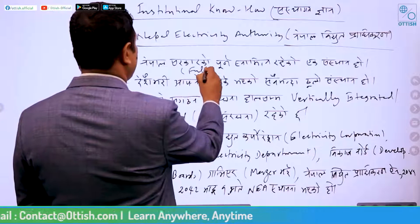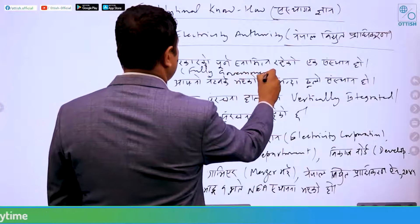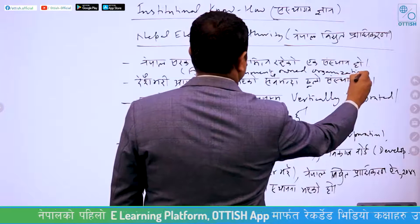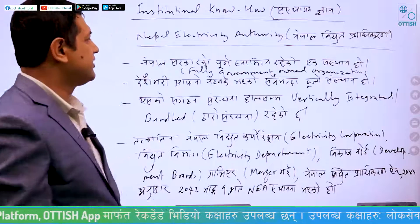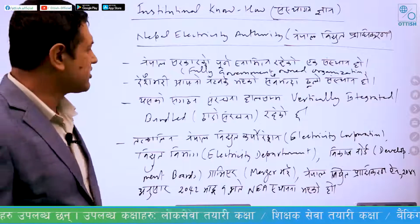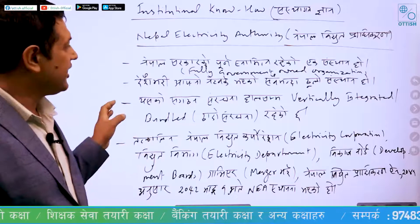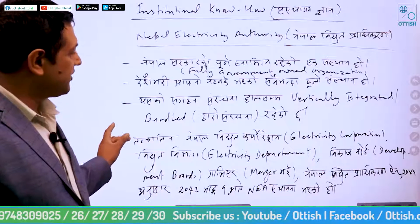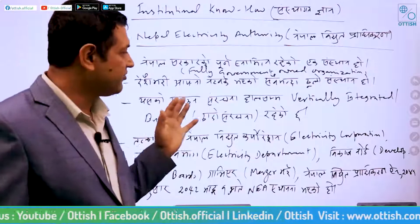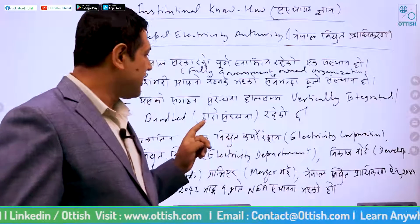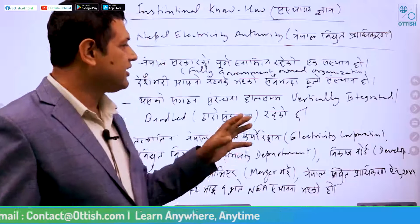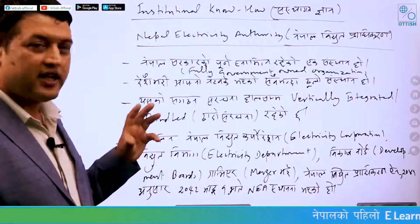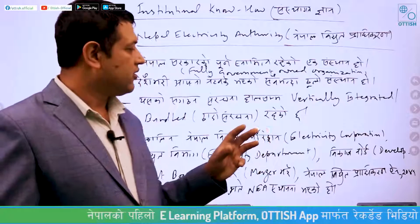It is a government-owned organization. It has a network throughout the country. There were three organizations at that time: one is the electricity corporation, the electricity department, and the development boards. These three types of organizations were merged to form a new organization for electricity generation, transmission, and distribution to give power to consumers.